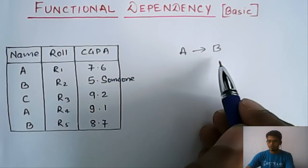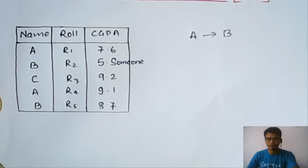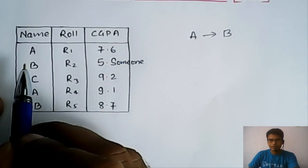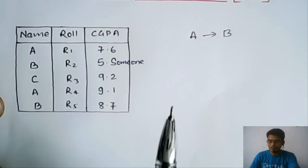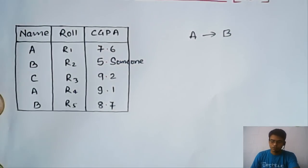What do we mean by saying this? Let's understand it with an example. Here we have a database of students which stores roll number, name, and CGPA. If I ask what is the CGPA of A,